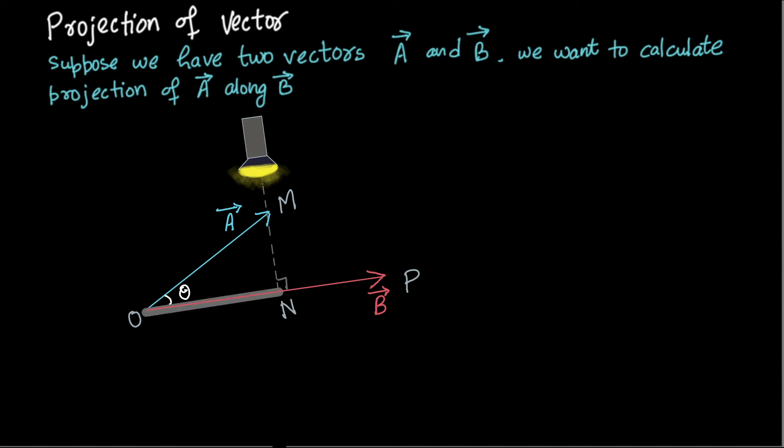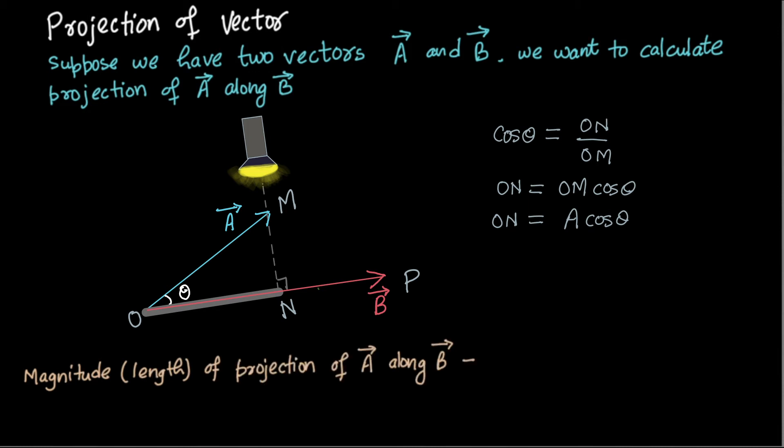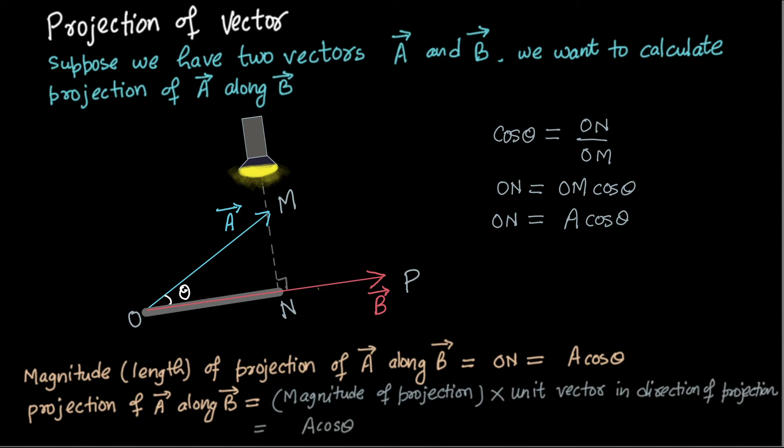From the right angle triangle, we can calculate the length of shadow and that is a cos theta. So magnitude or length of projection of vector a along vector b is a cos theta. Projection of vector a along vector b is magnitude of projection multiplied by unit vector in direction of projection. Here b cap is the unit vector in direction of projection.